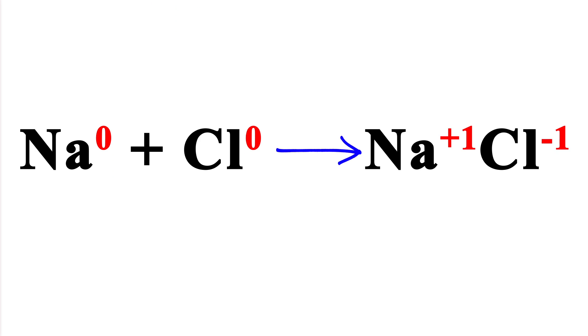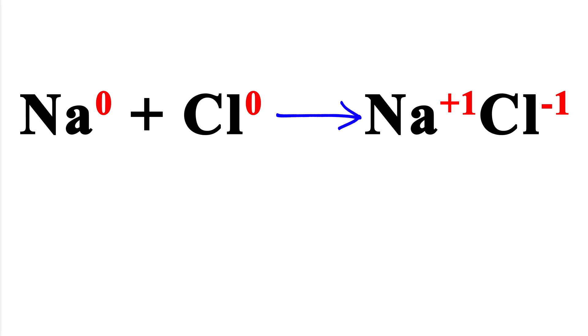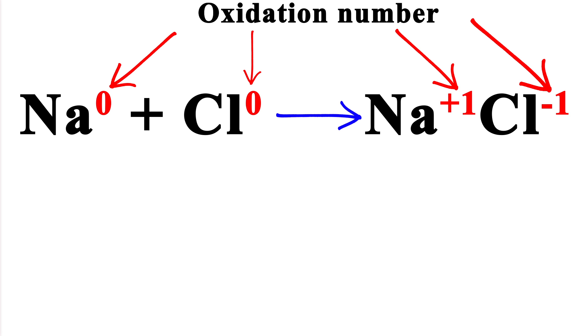How is sodium chloride formed? If we look at the equation, sodium and chloride are on the left side, and they are electrically neutral—they have no charge. On the right side, after the reaction, sodium has charge +1 and chloride has charge -1.